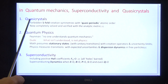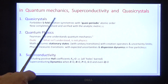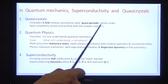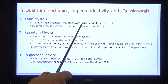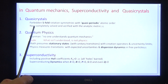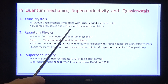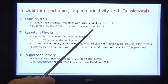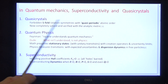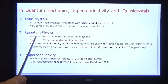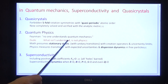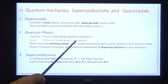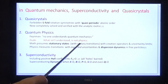The first is quasi-crystals. They have five-fold rotation symmetries which are forbidden, and quasi-periodic atomic order. The structure and diffraction are now completely solved and verified using the analytic metric. Secondly, quantum physics. Feynman famously claimed no one understands quantum mechanics, but failed to say what isn't understood is not physics.